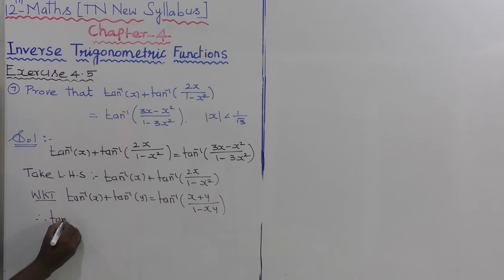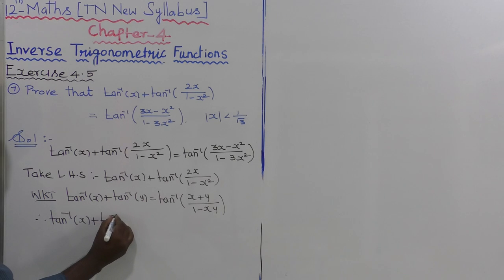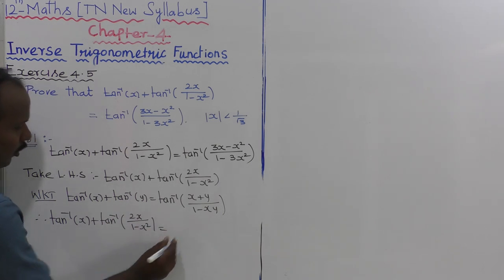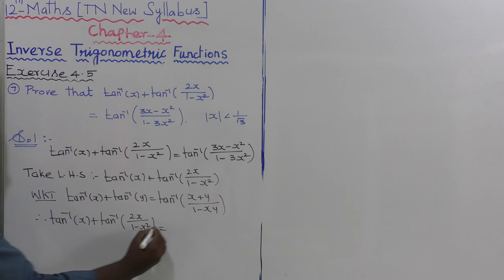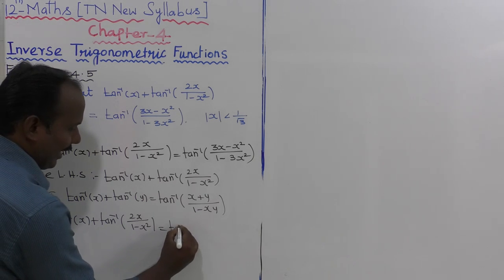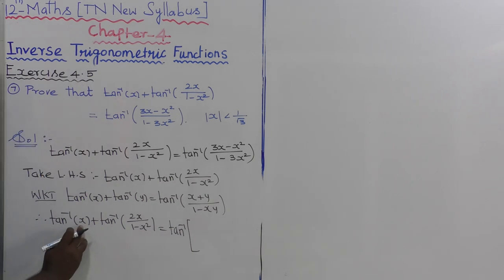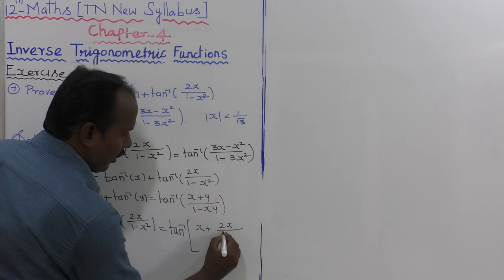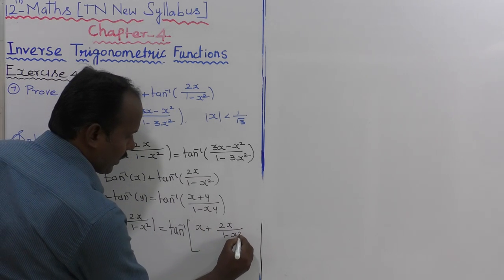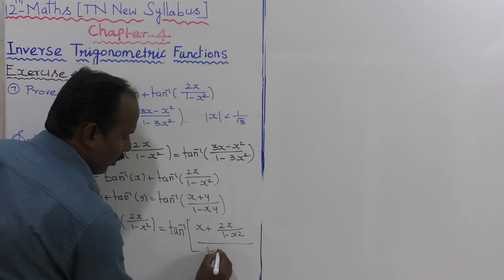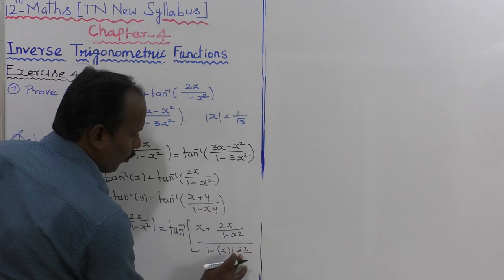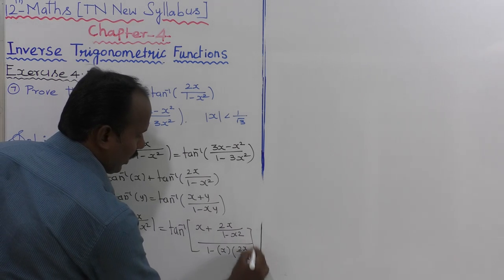Therefore, the left-hand side is tan inverse of x plus tan inverse of 2x divided by 1 minus x squared. That is equal to tan inverse of x plus 2x divided by 1 minus x squared, whole divided by 1 minus x into 2x divided by 1 minus x squared.